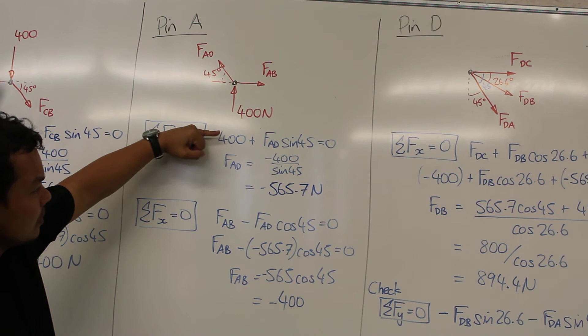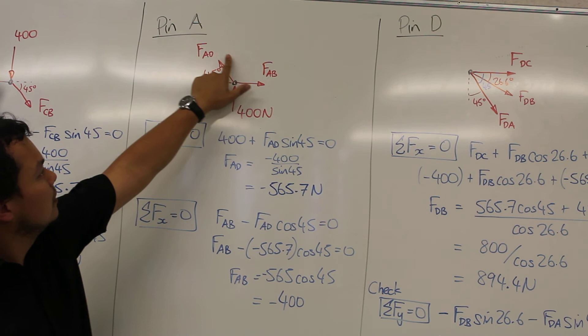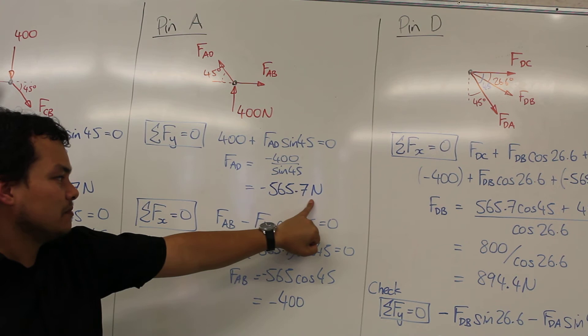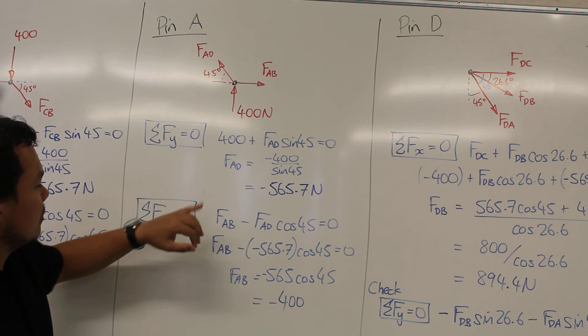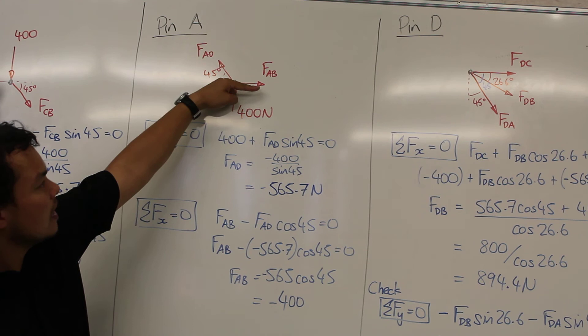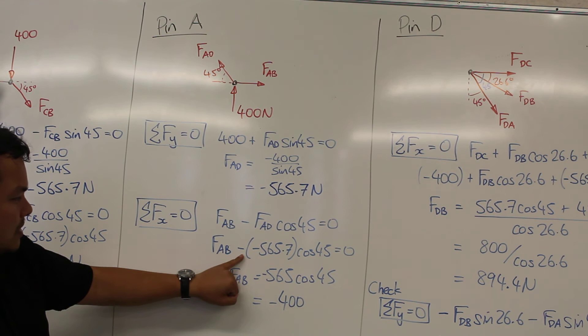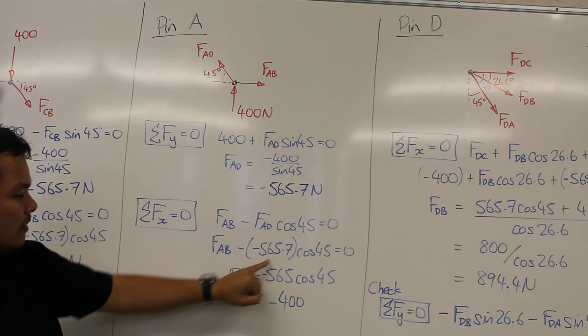Okay, so going through, balancing of forces in the y direction, we've got 400 newtons going up. Fad, the y component of that is Fad times sine 45, and then we get from that Fad equal to minus 565.7 from rearranging. We can substitute that back into our equation for forces in the x direction. In the x direction, we have Fab going to the right, and the x component of this force. So Fad times cosine of 45 going towards the left, so we get a negative here. We substitute the value of minus 565.7 into Fad, and then from here we get Fab equal to minus 400.